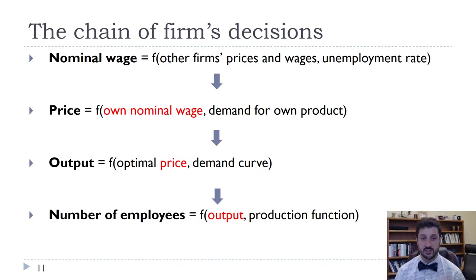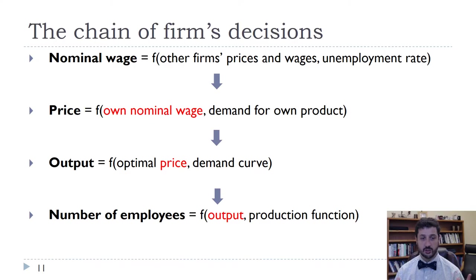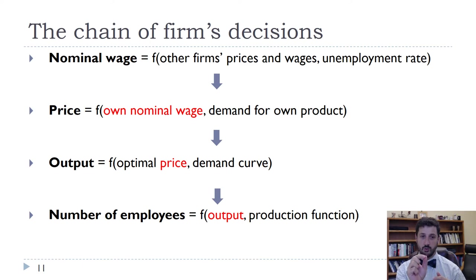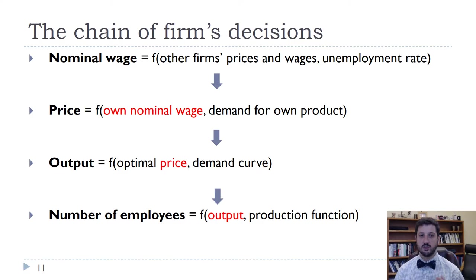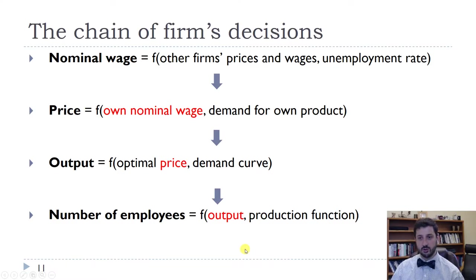Then firms set their price, which depends on their own nominal wage — one of their costs of production — and on the demand for their own product, which determines their markup. Then they determine how much to produce: output is based on the optimal price and the demand curve. When facing a downward sloping demand curve, choosing a point on that curve means choosing both a price and an output, because you can't sell more than what's on the demand curve at that price. And based on how much they want to produce, that determines how many workers they need, based on the firm's own production function.